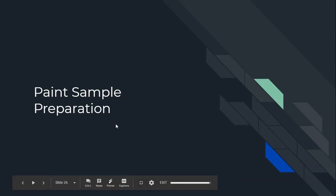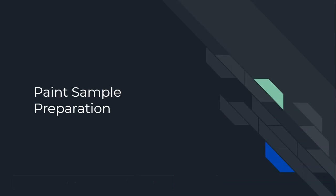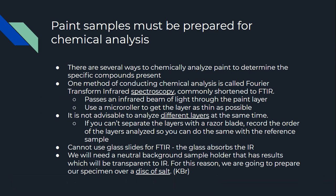This will be our last video on forensic paint and glass analysis. We're going to finish up with how you prepare paint samples for analysis and the chemical analysis of paint. Paint samples have to be prepared for chemical analysis, and there are several different ways to chemically analyze the paint to discover the compounds present. One method is called Fourier Transform Infrared Spectroscopy, or FTIR, which passes an infrared beam of light through the paint layer. You'll need to use a tool called a micro roller to get a layer of paint as thin as possible.